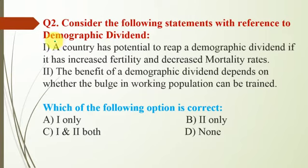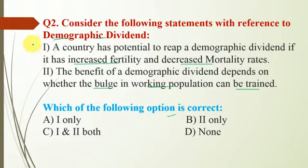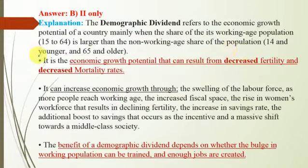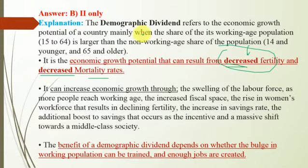Question number 2 is with reference to demographic dividend. Statement 1: A country has potential to reap a demographic dividend if it has increased fertility and decreased mortality rate. Statement 2: The benefit of a demographic dividend depends on whether the bulk of the working population can be trained. The option is again B because statement 1 is incorrect — it is decreased fertility, not increased, combined with decreased mortality rate.